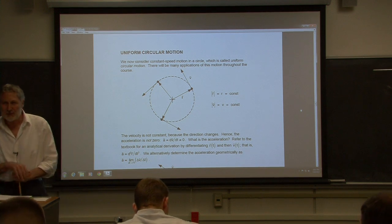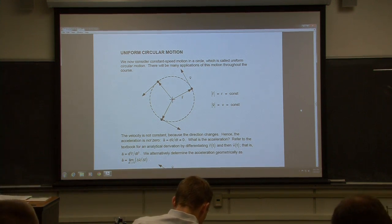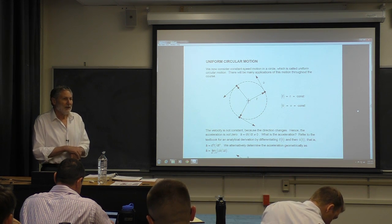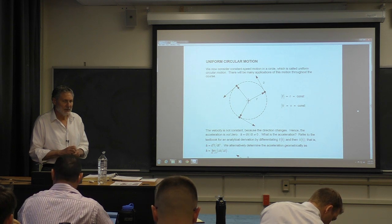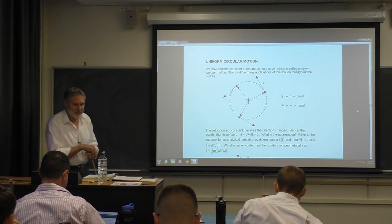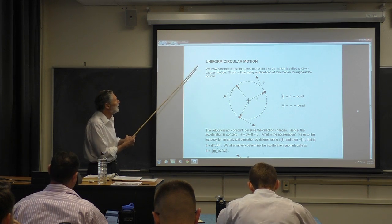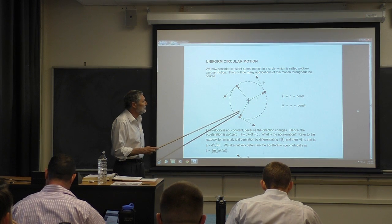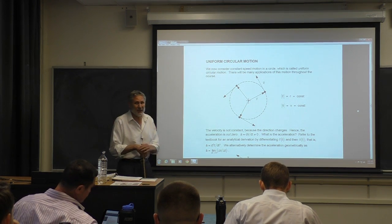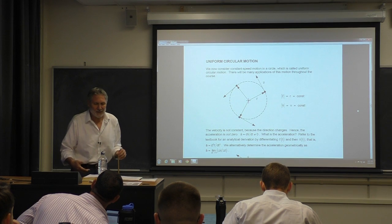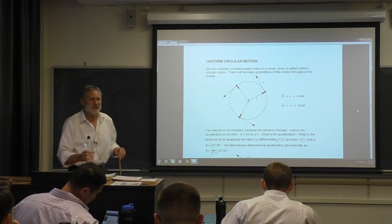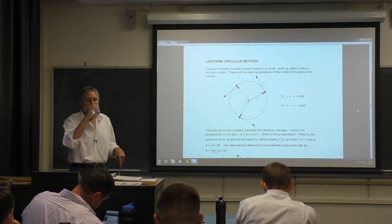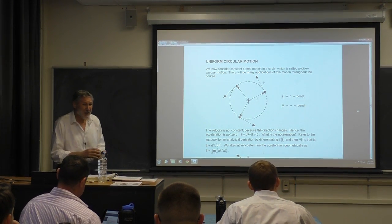So we looked at projectile motion and we'll be doing a number of problems on those. The next thing we need to look at as an example of kinematics outside of one dimension is what we call uniform circular motion. This is motion in a circle, and the uniform means that it's constant speed. This is a really important case in physics. We're going to look at it kinematically here.